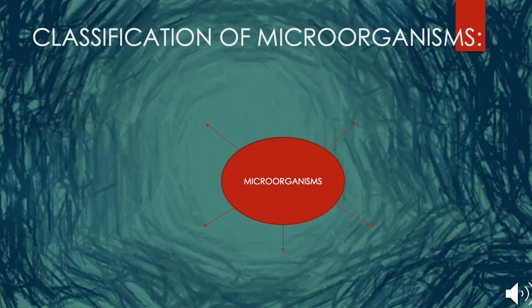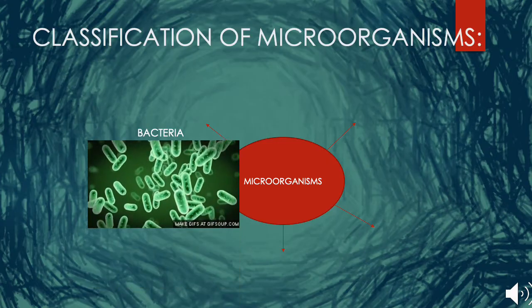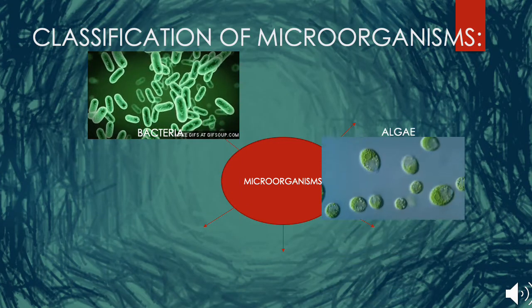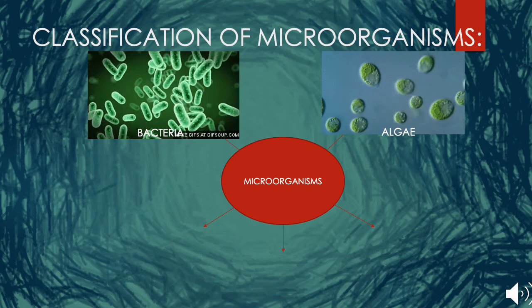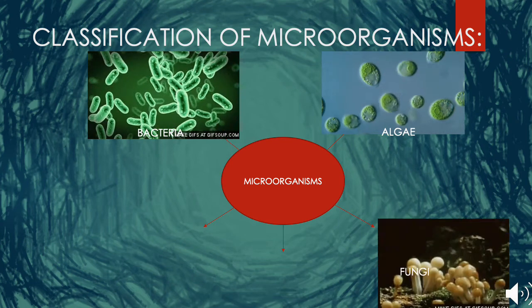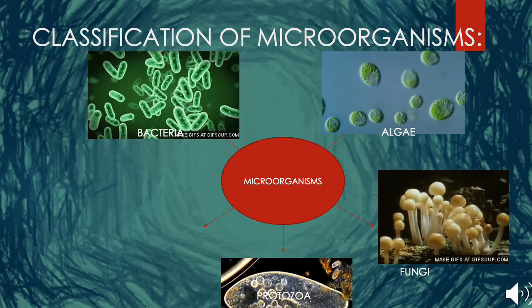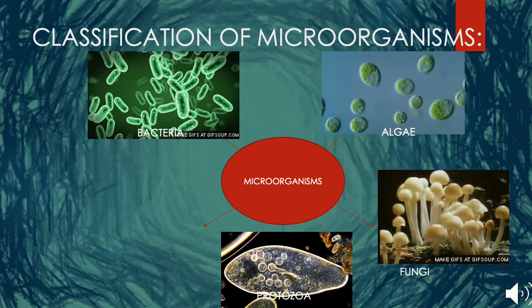Microorganisms are classified into five major groups: Bacteria, Algae, Fungi, Protozoa, and Virus.